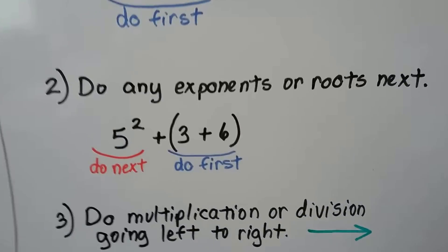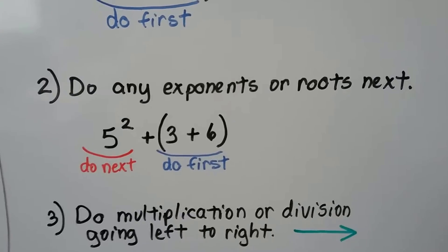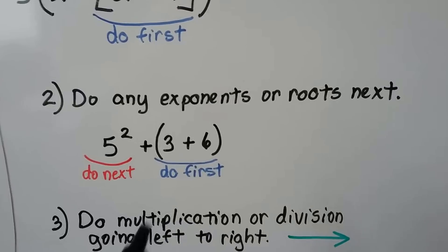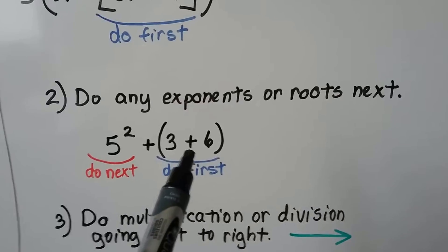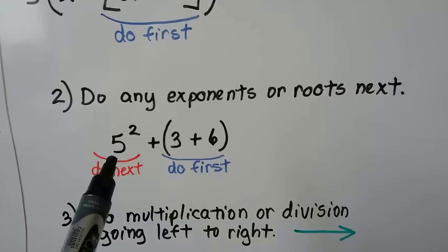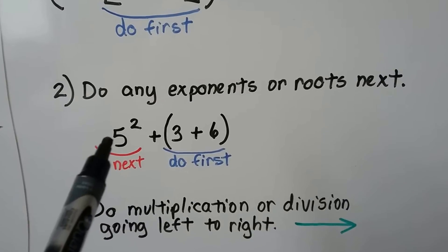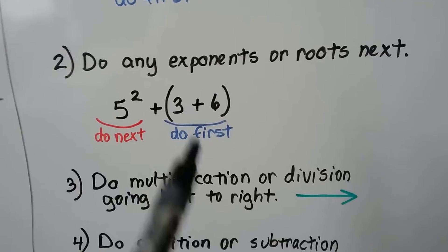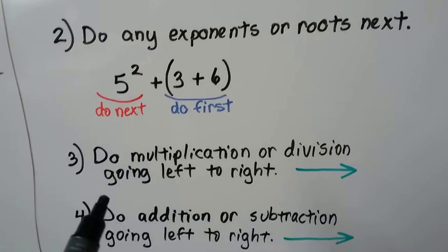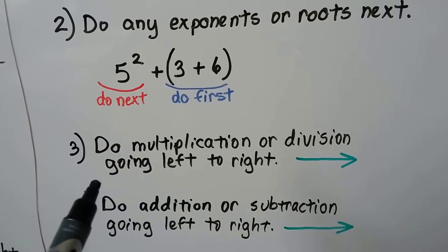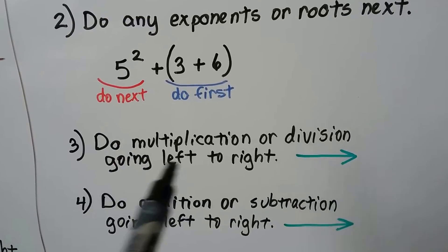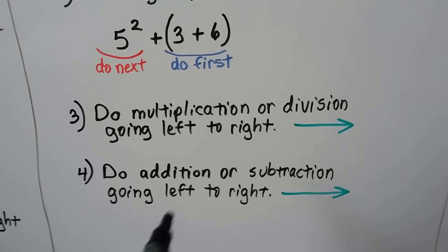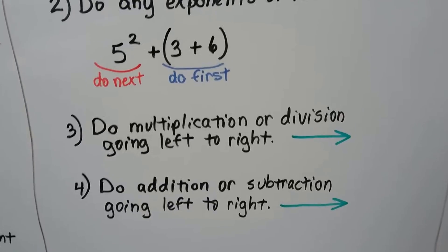For this example, we would do any exponents or roots next, after we handle the grouping symbols. So we would do this first and get a 9, then we would do 5 squared, which is 5 times 5 — that's 25 plus 9. We would then do any multiplication or division going left to right, then any addition or subtraction from left to right, whichever comes first.